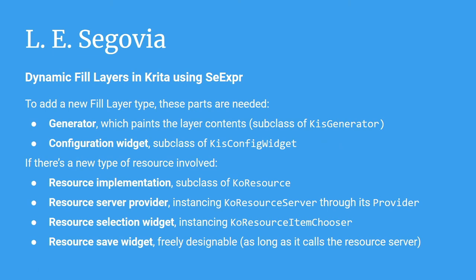From an implementation point of view, adding a fill layer type requires many moving parts. At minimum, you must implement a generator which fills the layer contents — generators are a subclass of Krita's basic generator. Next, you need to subclass its config widget to expose a configuration widget. You may also need to implement a new type of resource.